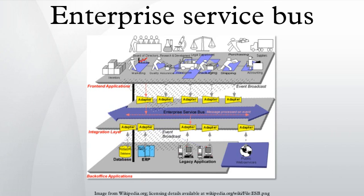Commonly needed commodity services include: event handling and guaranteed event processing; protocol conversion to transparently translate between communication protocols; mapping to transfer between tabular data formats; translation and transformation to change data content based on rules; and queuing and buffering to handle differing data processing speeds between sender and receiver.